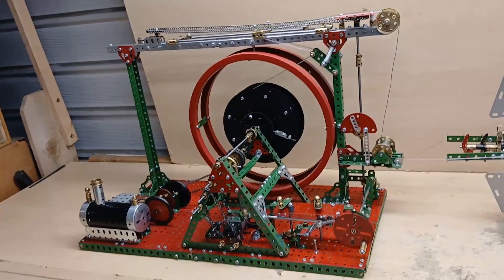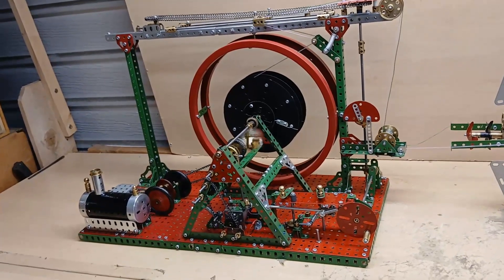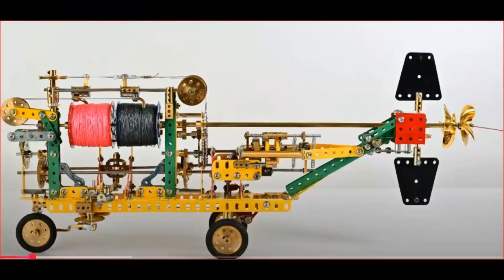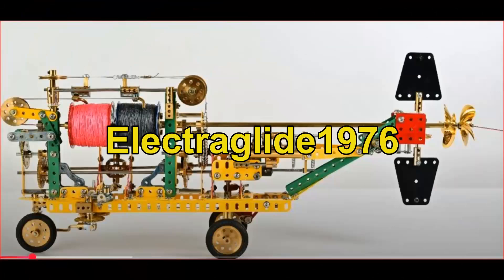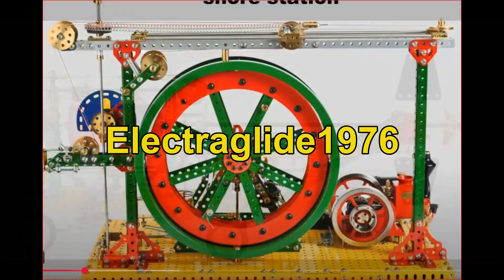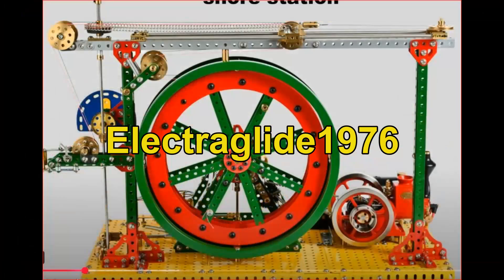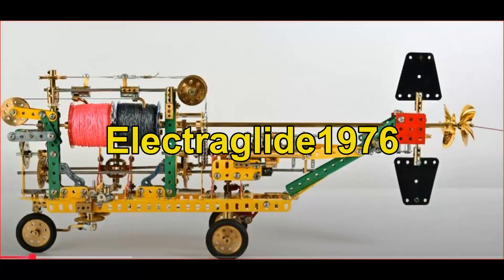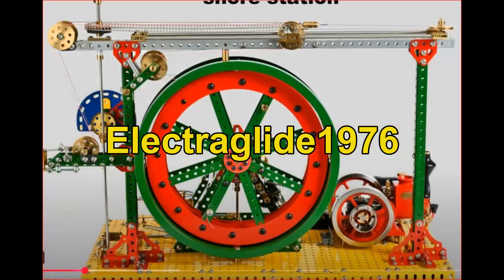This is the shore station that powered the torpedo. A much better model of this was built by Electroglide 1976, but I didn't have the parts and the engineering facilities that he has. So my model is a little less sophisticated, but I've decided to show it and give a commentary in the video.